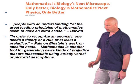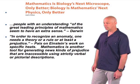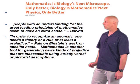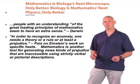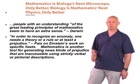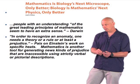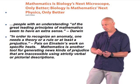In his biography of Albert Einstein, Abraham Pais said — speaking about Einstein's work on specific heats — 'In order to recognize an anomaly one needs a theory or a rule or at least a prejudice.' My thinking here is that mathematics gives us another way to develop prejudices, often prejudices that are inaccessible using strictly verbal descriptions. At the end of the day, my belief is that this interplay between prejudice, expectation, and experimentation is the way that we often improve our understanding of problems.